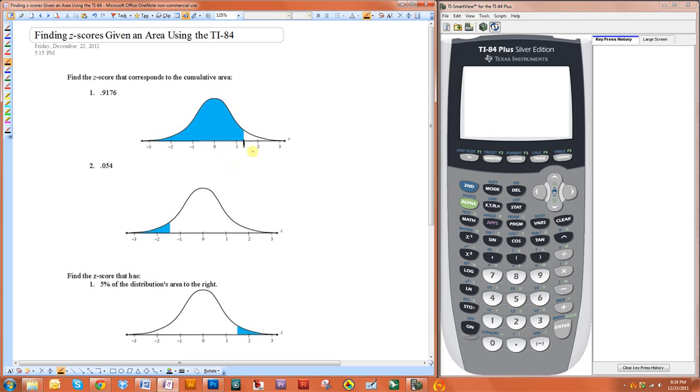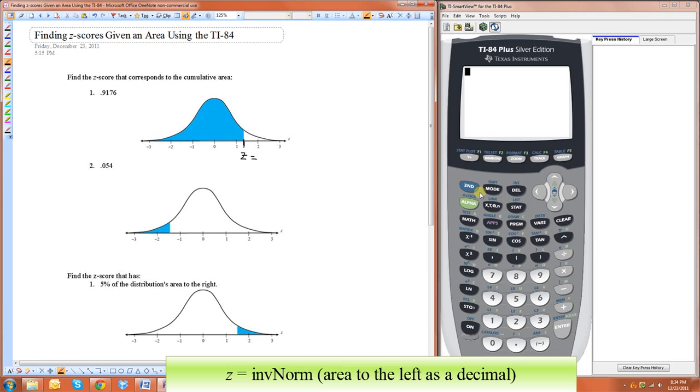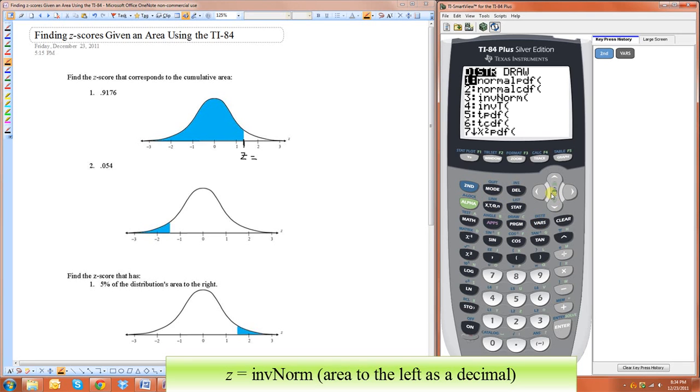This is actually not too difficult with the TI-84. What we're looking for is z. And the way we find this is using the inverse normal function. So if you do second, vars, and notice number three is invNorm.